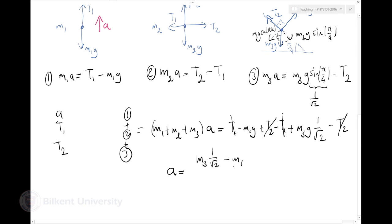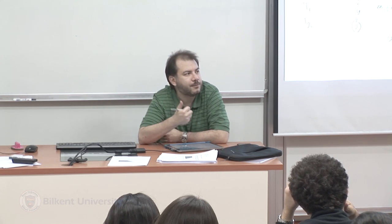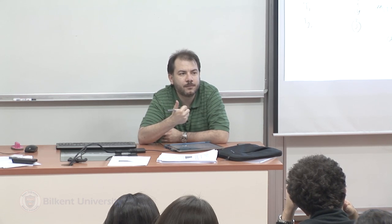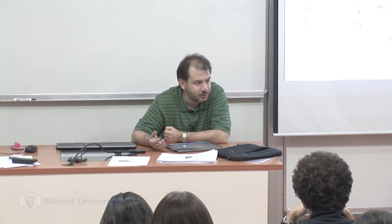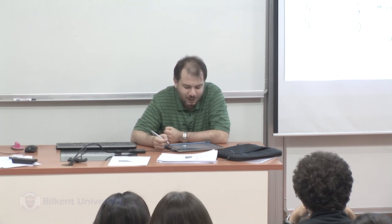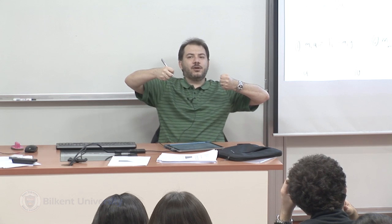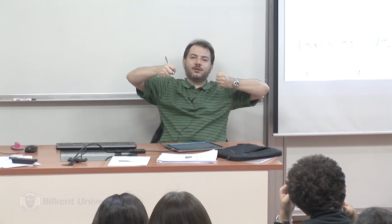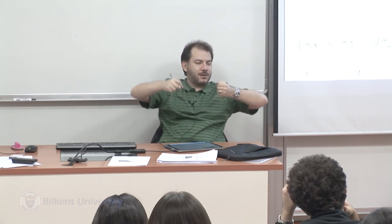So apparently a = [M3·(1/√2) − M1]·g / (M1 + M2 + M3). Let's check: my goal is to find acceleration in terms of given quantities - M1, M2, M3 are given, g is given. For units: the numerator has kilograms times g (acceleration), denominator is kilograms - the kilograms cancel, leaving g which is acceleration. Unit-wise this is correct.